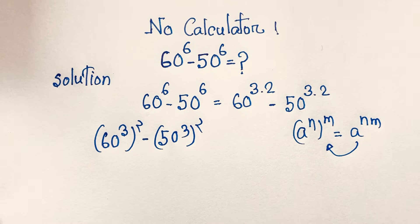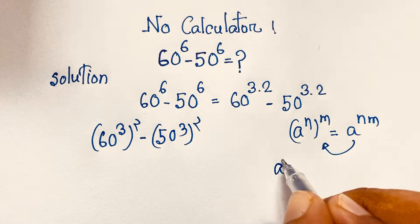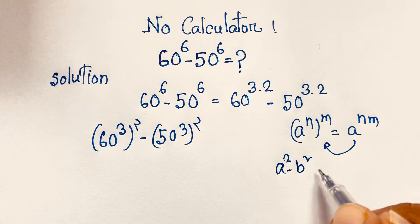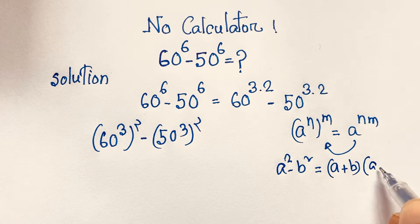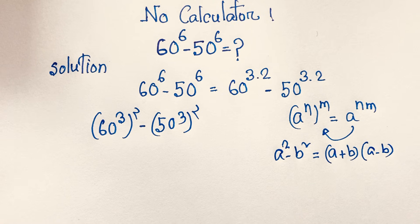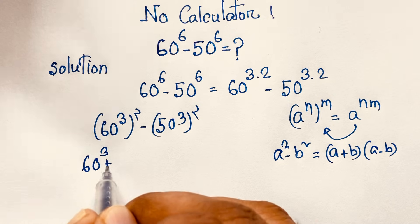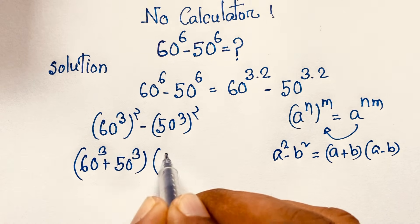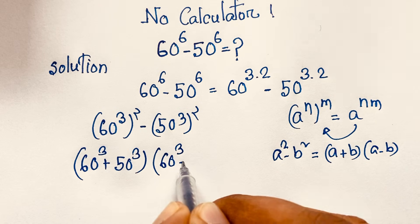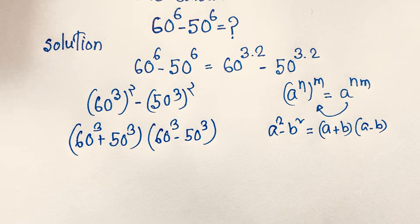Now if you think of 60 power 3 as a and 50 power 3 as b, you know the formula: a squared minus b squared equals (a plus b) times (a minus b). Applying this formula here, it becomes: (60³ plus 50³) times (60³ minus 50³).